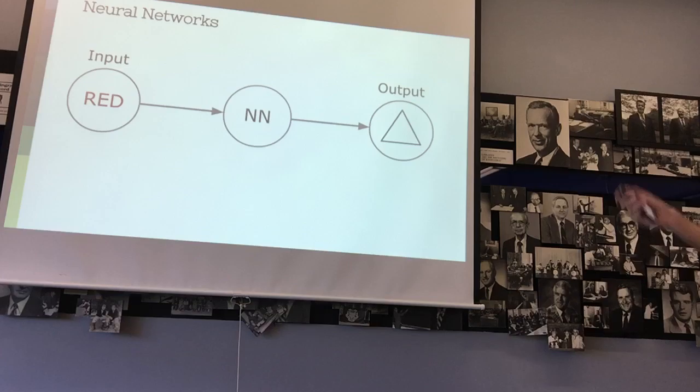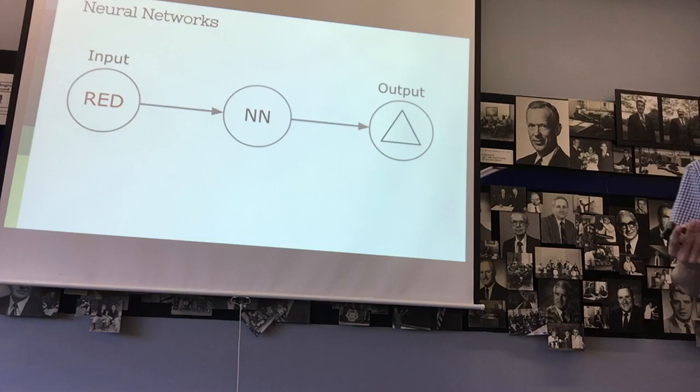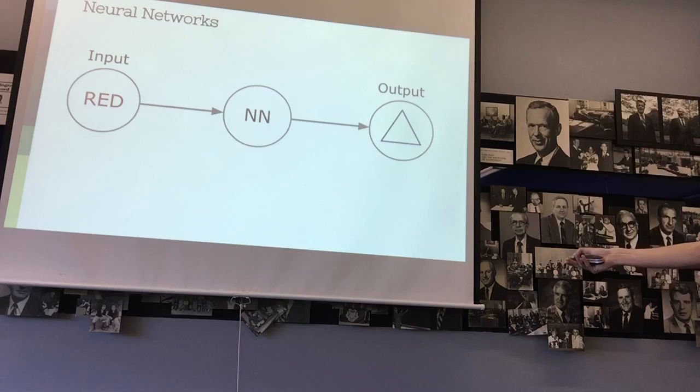But neural networks are able to, when they're given a specific input, that input can be passed into the neural network as some sort of mathematical abstraction, as some sort of mathematical version of that input. And then it gets passed through the neural network and whatever it's trained to output is output. So, in this case, if you pass in red, it's going to output triangle. If you were to pass in blue, it would output square.